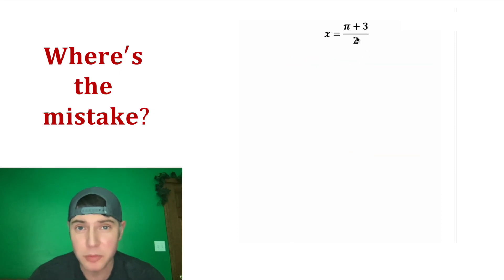So we're going to start with x equals pi plus 3 over 2. And first we multiply both sides by 2. On the left hand side we have 2x and on the right hand side these 2s cancel, so we're left with pi plus 3.